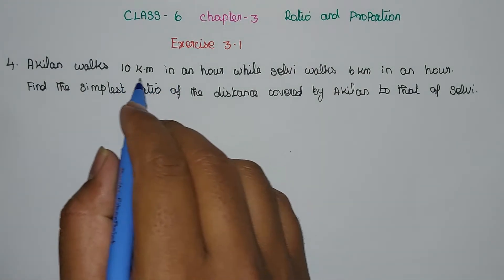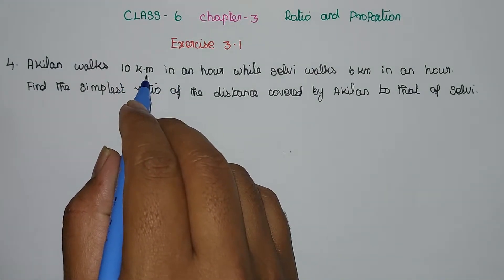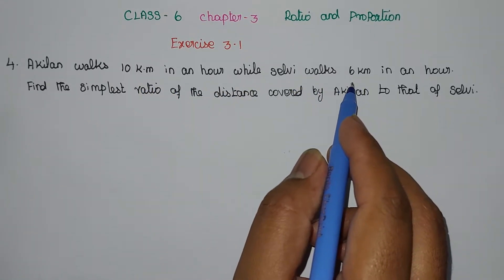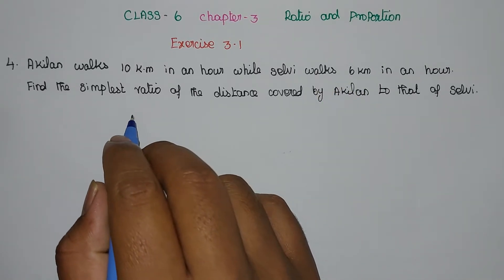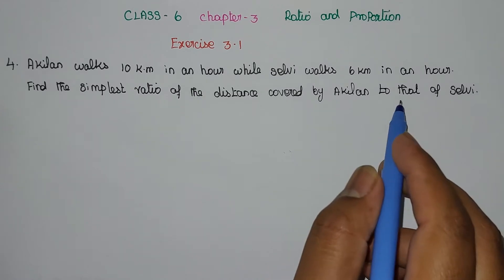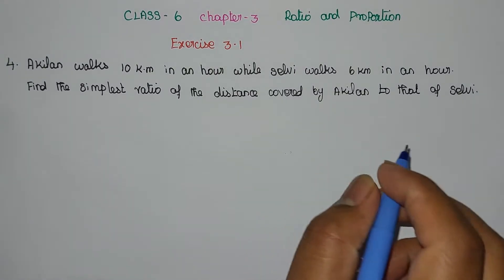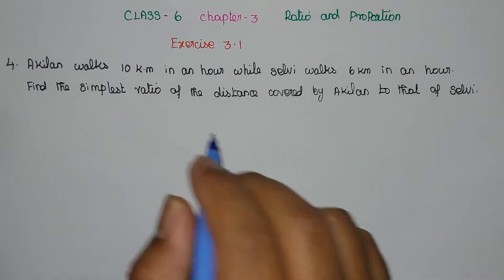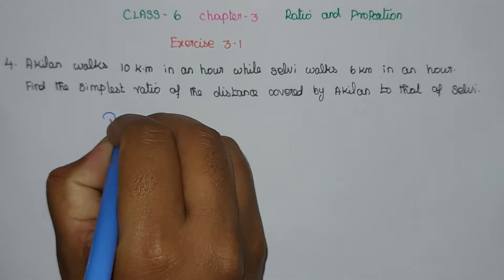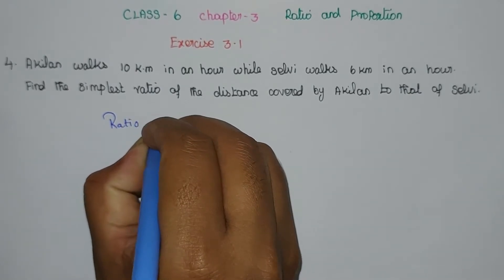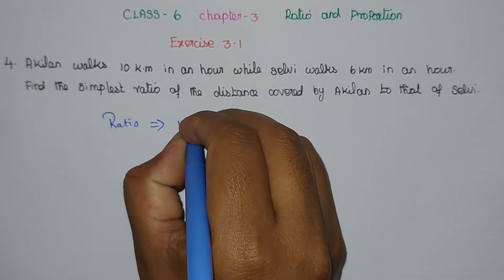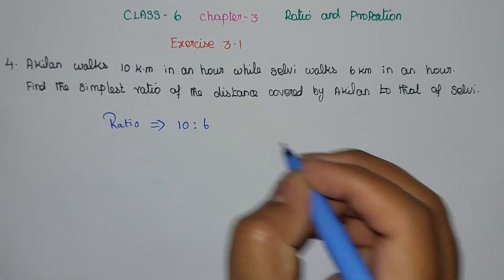Aguilan walks 10 km in 1 hour, Selvi walks 6 km in 1 hour. This is the simplest ratio of the distance covered by Aguilan to that of Selvi. So, the ratio is 10 by 6.